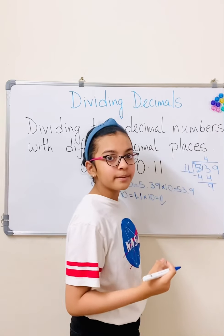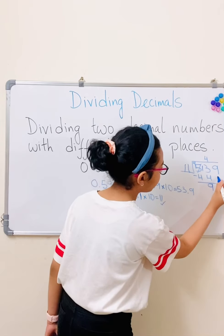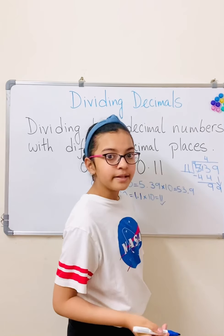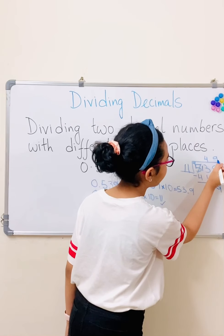And then we know 4 minus 4 is obviously 0. So we bring down the 9 here. And 11 into 9 is 99. So let's just put that up.